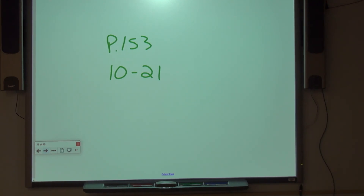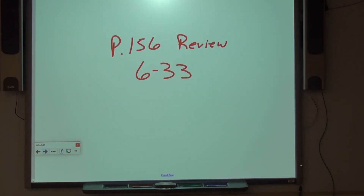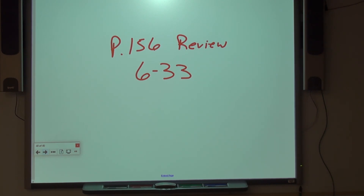For problems with a variable on both sides of the inequality, keep the same rules: move variables to the left. Subtract y and subtract 2: 5y minus y equals 4y, less than or equal to 34 minus 2 equals 32. Divide by 4: y is less than or equal to 8. That concludes this chapter. Last assignment: page 153, problems 10 through 21. After this section, let Mr. Vogt know — you'll have the review section followed by the chapter 3 test. Review assignment: page 156, problems 6 through 33. Ask Mr. Vogt if you have any questions, then take your test.